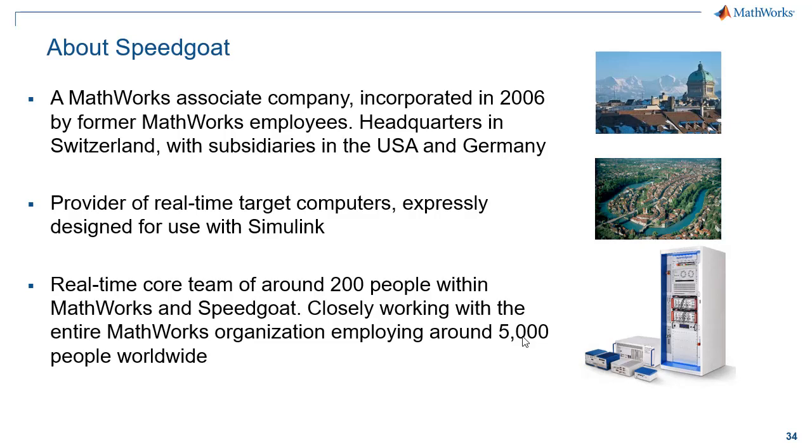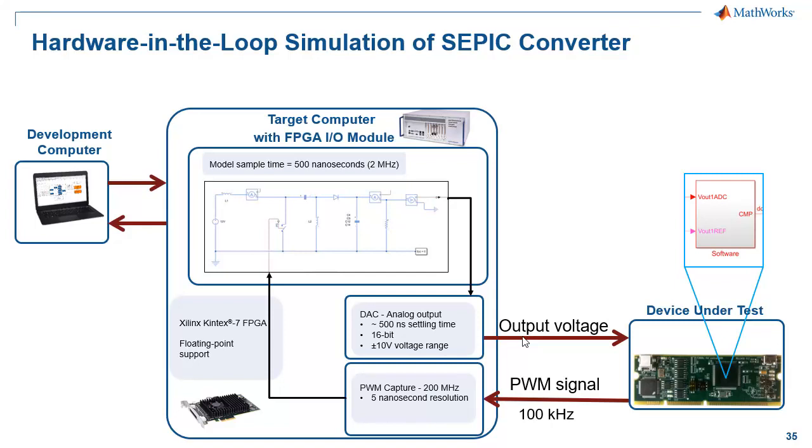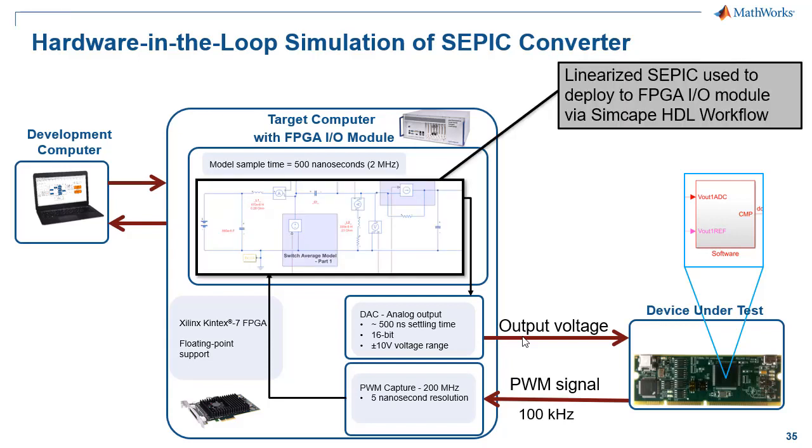SpeedGoat is an associated company by MathWorks in Switzerland that provide real-time solution for hardware in the loop and rapid code prototyping and here we can see what they did with this model that I provided them. They used the SimScape to HDL technology to linearize the SEPIC at different operating point and then be able to flash it on a FPGA. So there is a workflow that we offer that allows you to go from a SimScape model to HDL code and then this HDL code running on the FPGA allows us to test our algorithm that still has 100 kHz PWM signal, which is very fast. So we needed to have a very high resolution capture at 200 MHz and then to have the model running at least at 2 MHz on our FPGA, something that they could achieve.